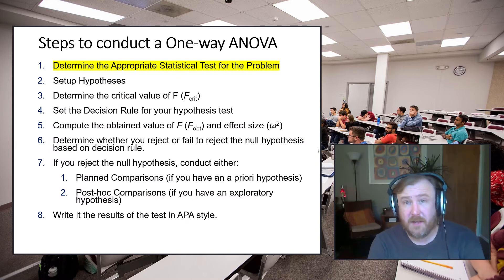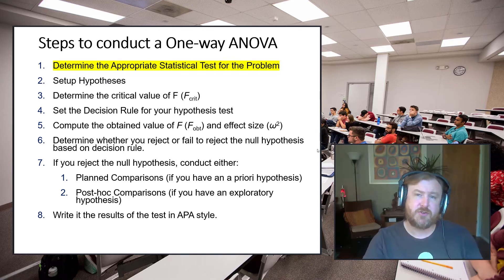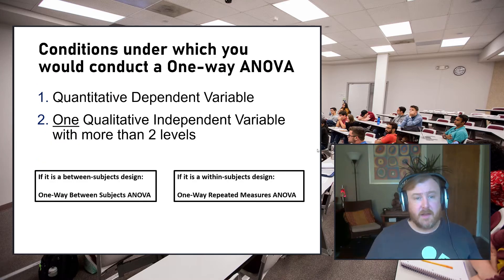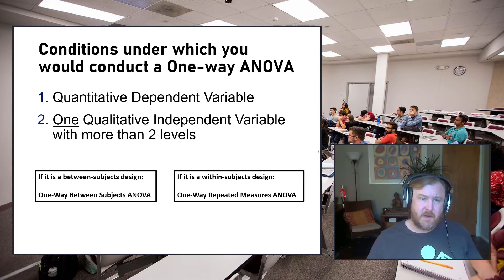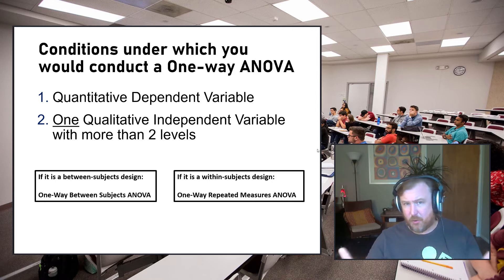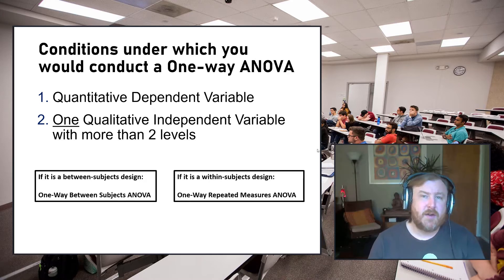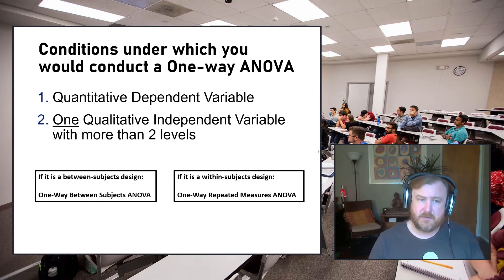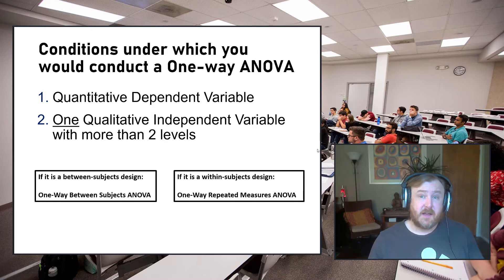How do you know you should conduct a one-way ANOVA? First, you need a quantitative dependent variable. Second, you need one qualitative independent variable — meaning groups with two or more levels. Typically you'd run a one-way ANOVA with three or more levels, since a t-test is the typical test for two means, but you can conduct an ANOVA with just two group means.